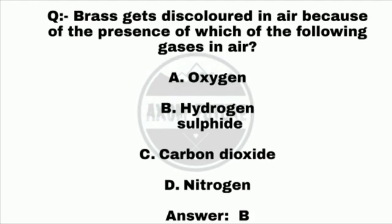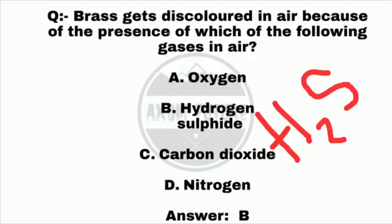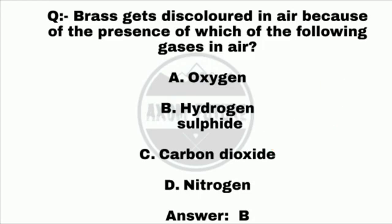Question 10: Brass gets discolored in air because of the presence of which of the following gases? The answer is option B, hydrogen sulfide (H2S).